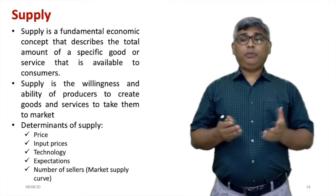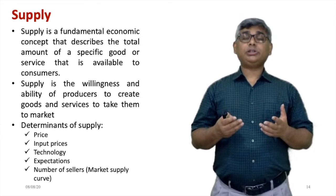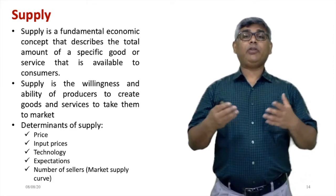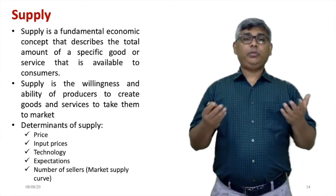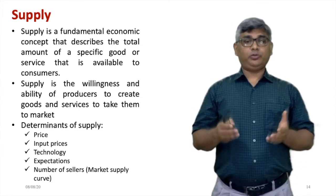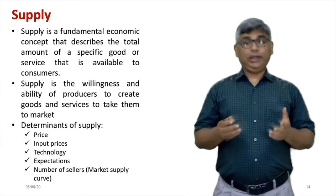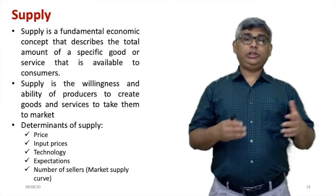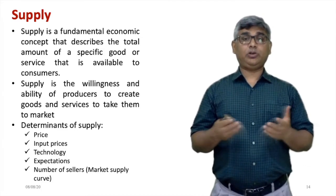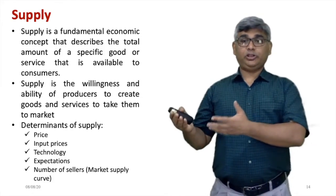As a manufacturer, it is important to know how many quantities of a particular product I need to supply in the market at any given point of time. Supply is the willingness and ability of producers to create goods and services and to take them to the market. Ideally, what the demand is should be supplied, but depending upon the situation — say if my plant capacity is not enough — I may produce quantities less than what is being demanded.